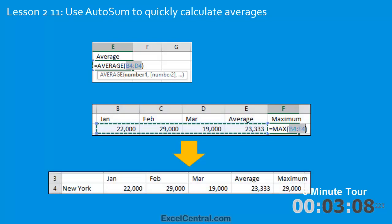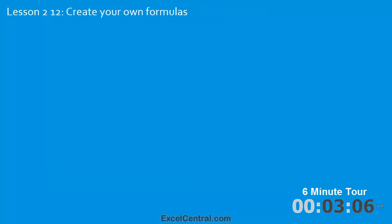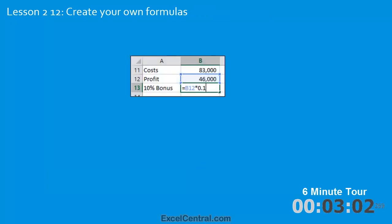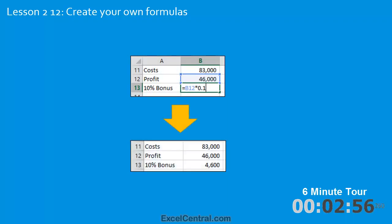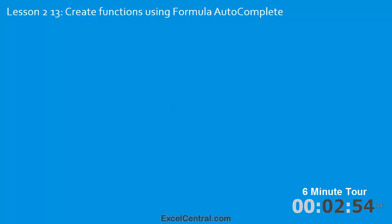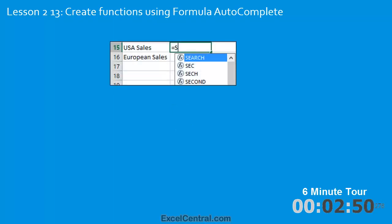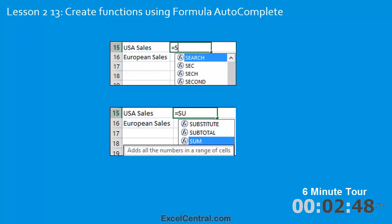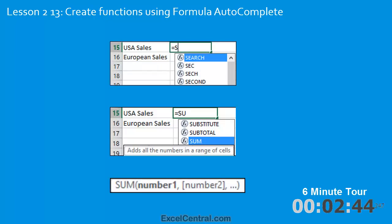Here are the results of the AutoSum formulas. In the twelfth lesson you'll create your own formulas from scratch — a formula that calculates 10% of the profit to pay out as a bonus. In the thirteenth lesson you'll create functions using Formula AutoComplete, your route into the full Excel function library, and you'll learn how to use the syntax box to quickly identify the arguments that a function needs.